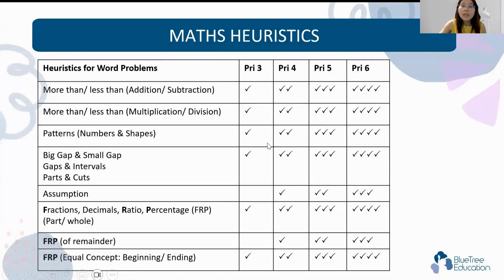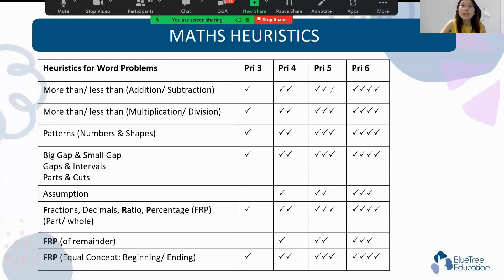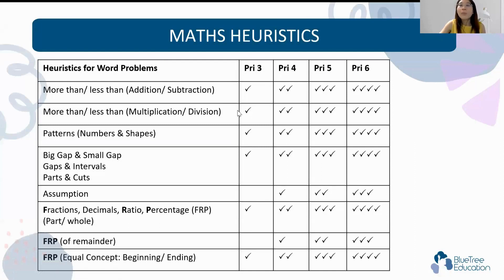Let's move on. These are the different heuristics for math — there are many different kinds, and the difficulty level increases at higher levels. Foundation is very important. P3 students, please don't think it's easy — all your heuristics start coming in at P3, then you add on at P4, P5, and P6. So start working on your foundation and start doing practices now.